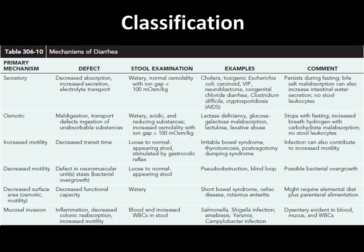Coming to the classification of diarrhea based on mechanism: it could be secretory, osmotic, increased motility, decreased motility, decreased surface area, or mucosal invasion. In secretory diarrhea, the defect is decreased absorption and increased secretion. A good example is cholera and enterotoxigenic E. coli. Patients have diarrhea even during fasting, and stool examination shows no leukocytes.